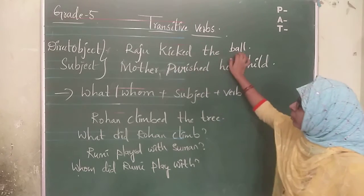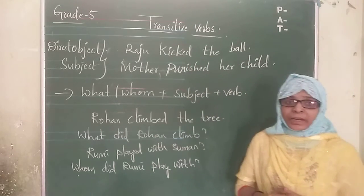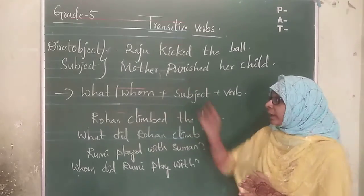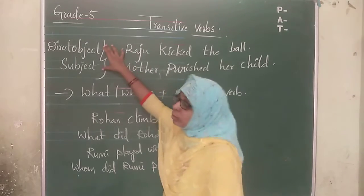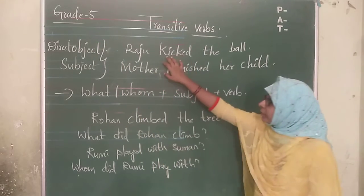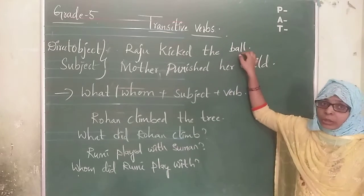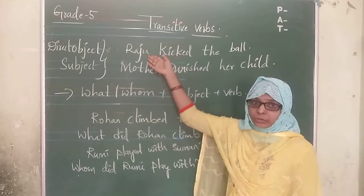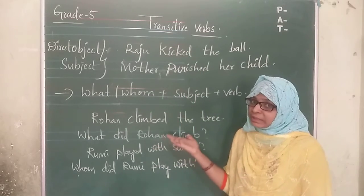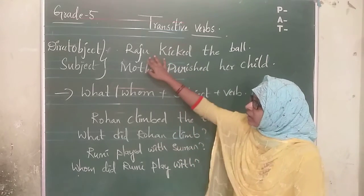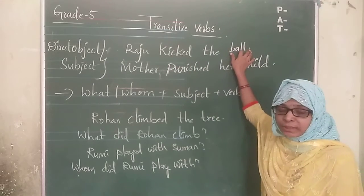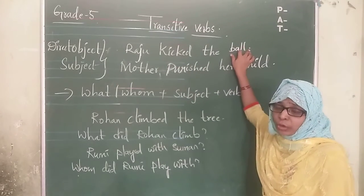For example: Raju kicked the ball. Transitive verbs need a subject and a direct object — these two things should be there in a transitive verb. Who is the subject here? Raju. And kicked the ball — ball is the direct object here.